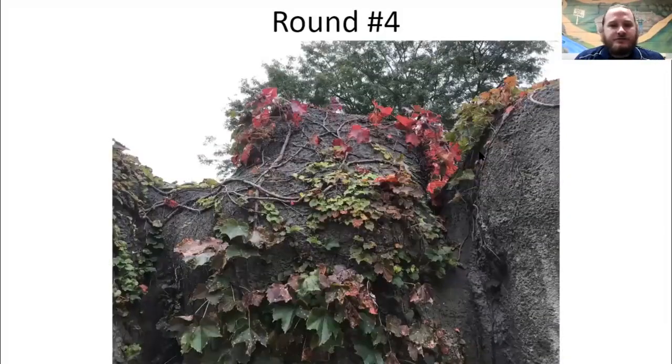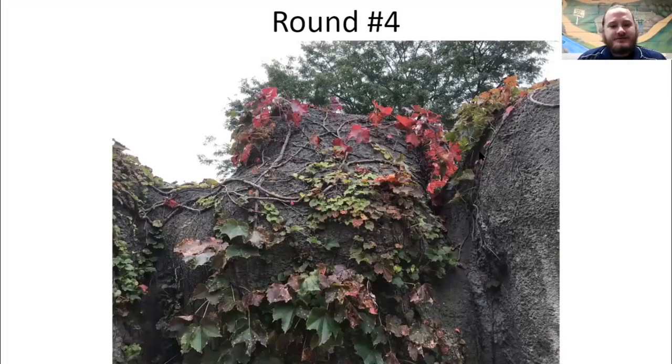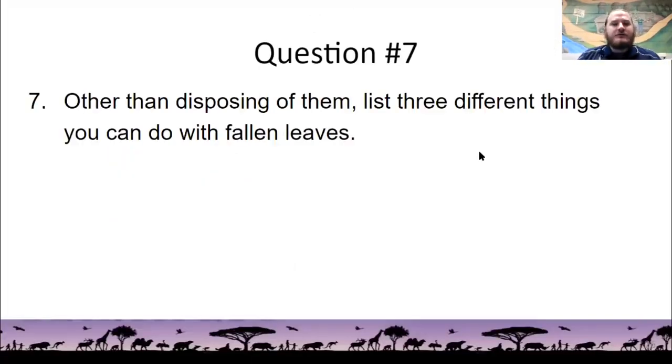All right, moving on to round four. Now, here's another really amazing photograph of some leaves changing color. Question number seven, other than disposing of them by, like, burning them or just throwing them in bags and throwing them away, list three different things you can do with fallen leaves. And again, this is the question where you can wager between zero and three points. So if you feel really strongly, I'd encourage you to wager up to three points, and you'll get those points if you get it right.